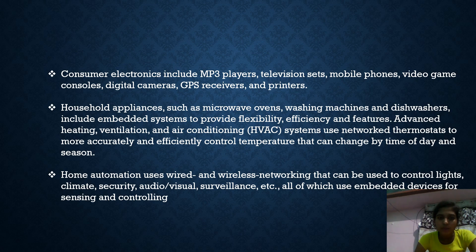Household appliances such as microwave, washing machine, and dishwasher include embedded systems to provide flexibility, efficiency, and advanced heating. Also, ventilation and air conditioning systems use networked thermostats to more accurately and efficiently control temperature, which can change based on the time of the season.